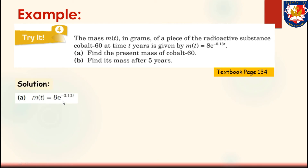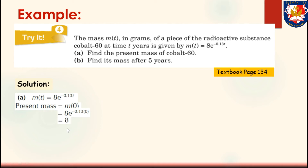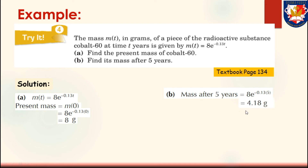For Part A: M(T) equals 8e to the power of negative 0.13T. The present mass means M(0), so T equals 0. Substituting gives 8 times e to the power of negative 0.13 times 0, which equals 8 times 1, equals 8 grams. For Part B: the mass after 5 years equals 8 times e to the power of negative 0.13 times 5. By calculation, it equals 4.18 grams.